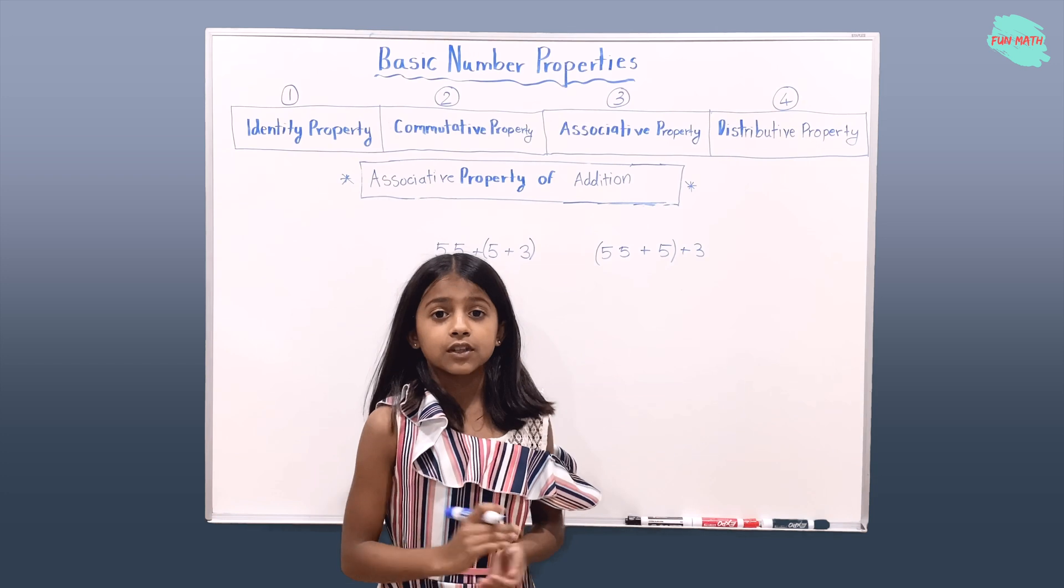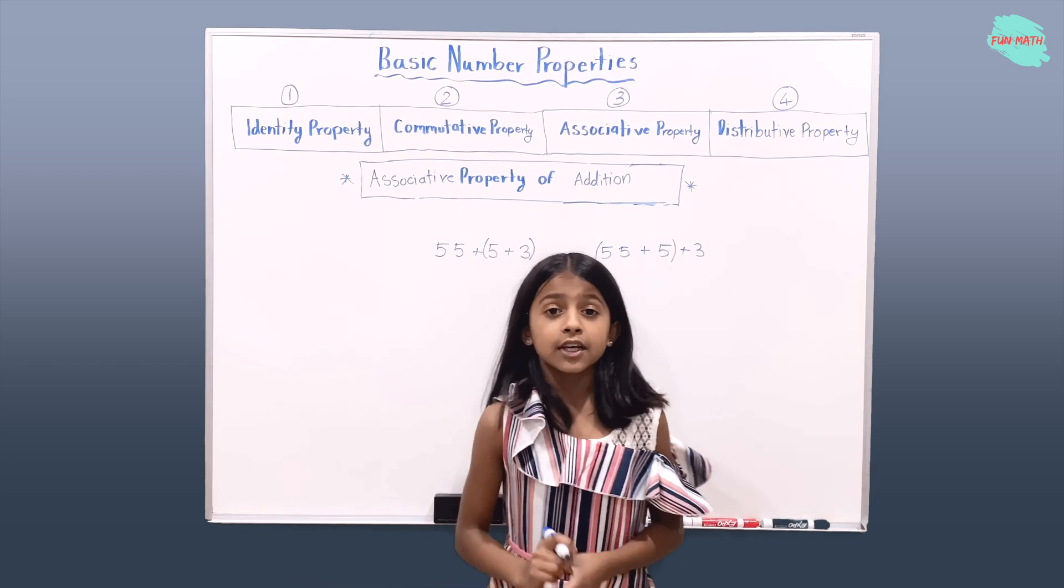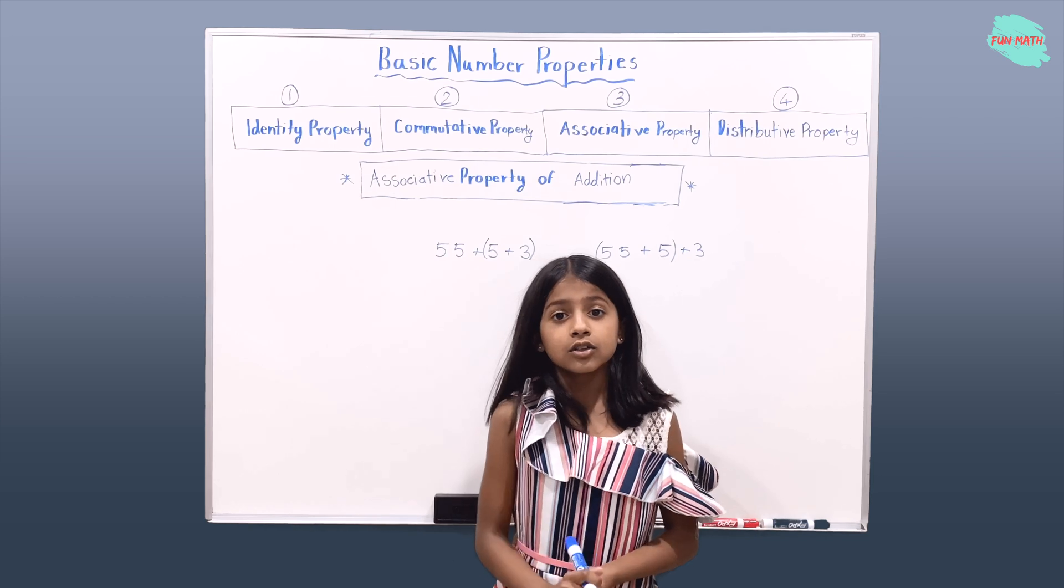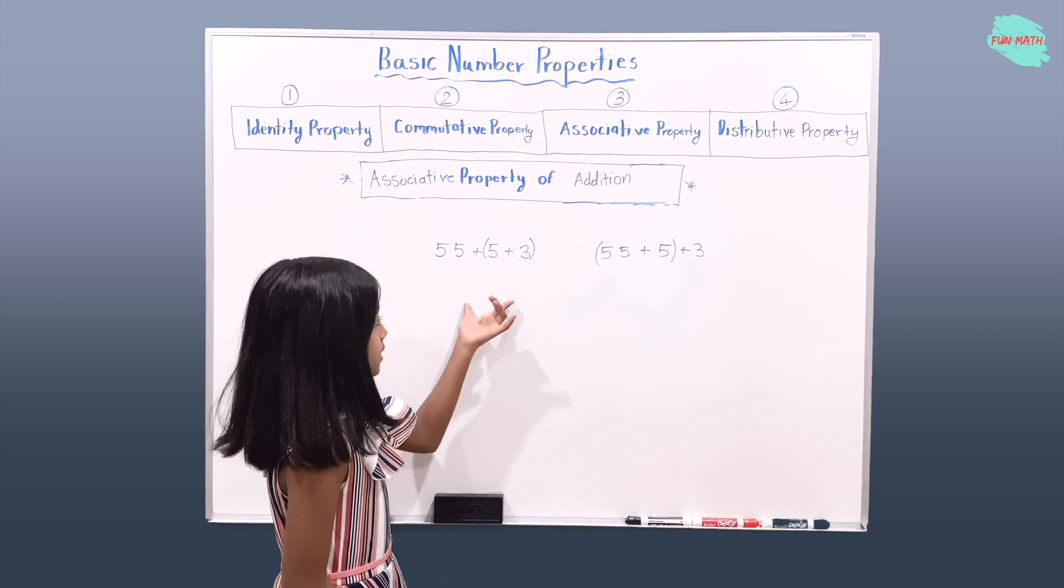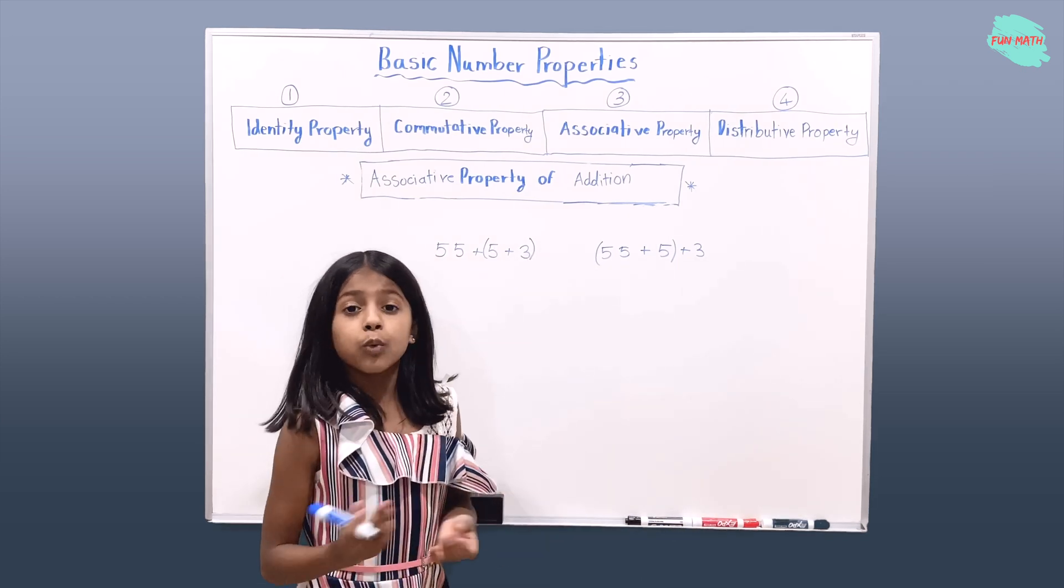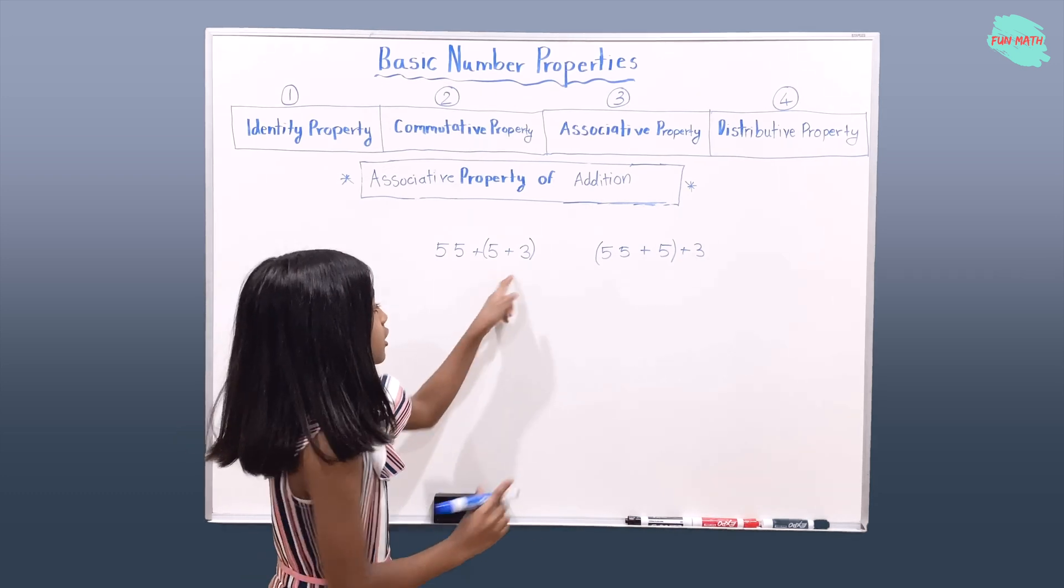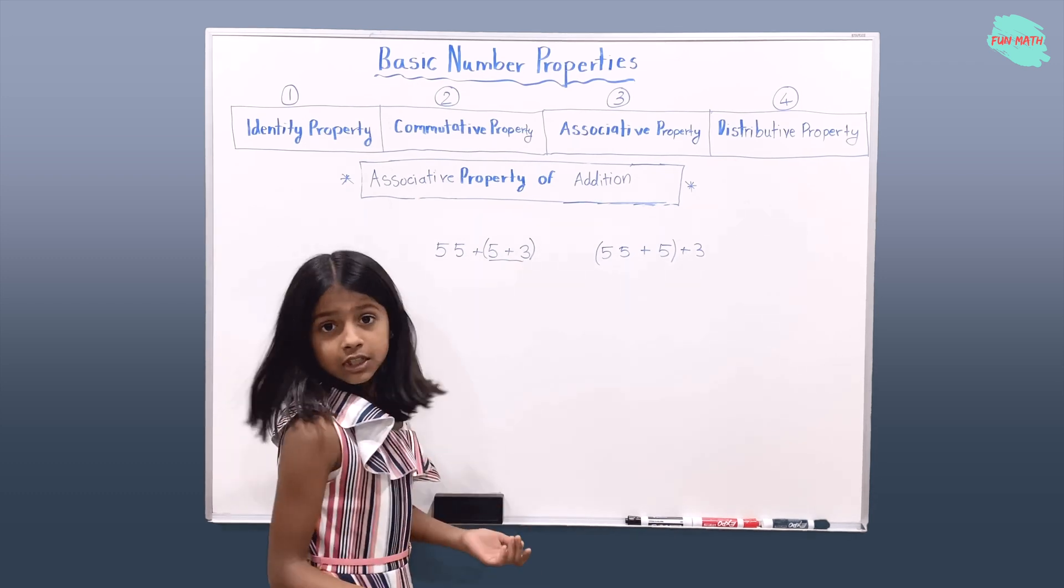So what are associatives? Associatives are like numbers that work together or group together. So here in this number sentence, which numbers are associatives? If you see here, 5 and 3 are both associatives.